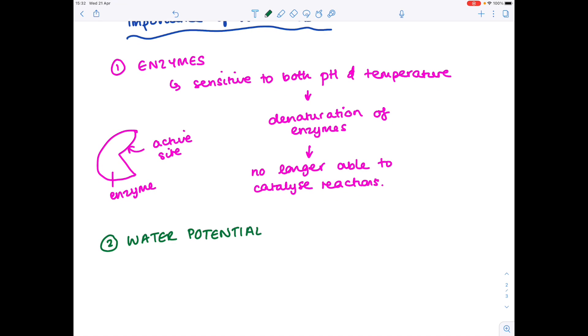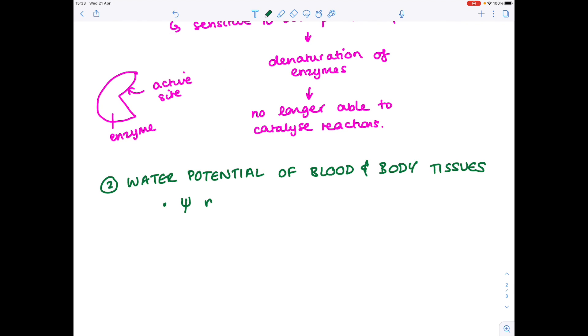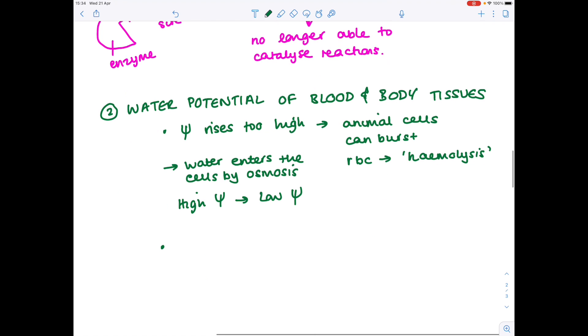If we consider now the water potential of the blood and body tissues. If the water potential rises too high, remember this is the symbol for water potential, then we know that animal cells can burst. And specifically if we look at red blood cells, when they burst, this is known as hemolysis. And why is that? Because water enters the cells from an area of high water potential to an area of lower water potential.